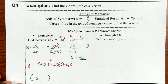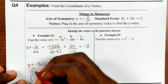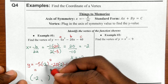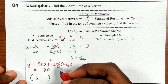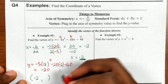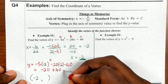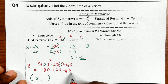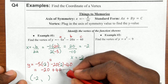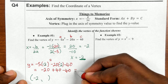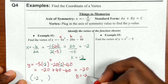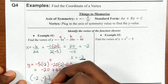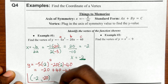Now we calculate — you can use a calculator, but I'm not going to. Negative 2 squared is 4; 4 times negative 5 is negative 20; negative 20 times negative 2 is positive 40; bring down the negative 40. So 40 minus 40 is 0, and my y value is negative 20.